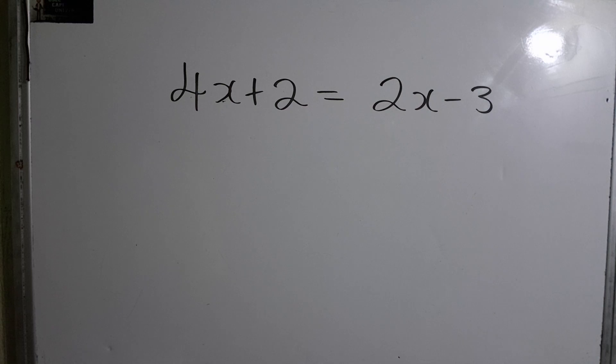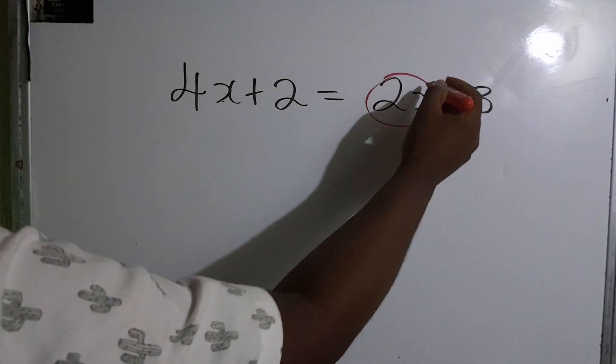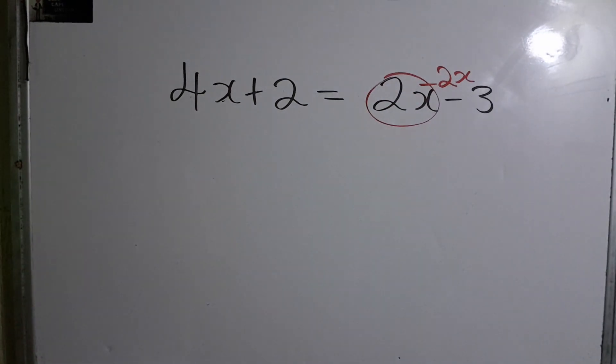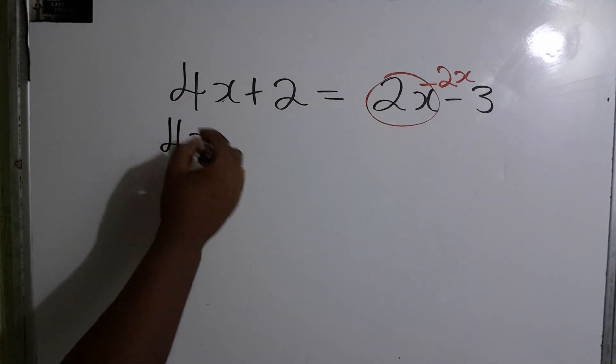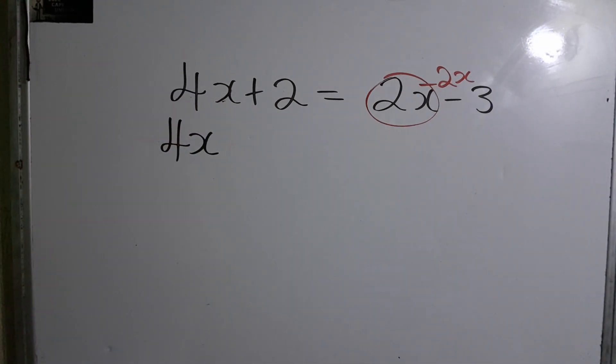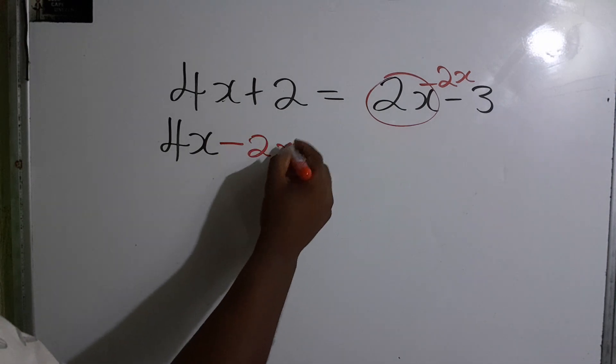So what we do, we are going to take the opposite of this 2x, which is minus 2x, because we want to get it with the 4x but we must take the opposite. So this now becomes minus 2x.